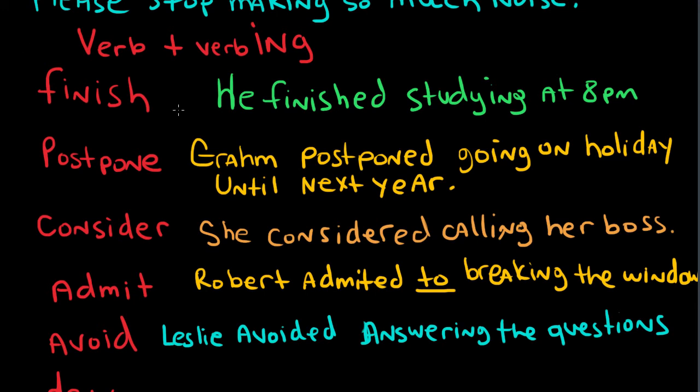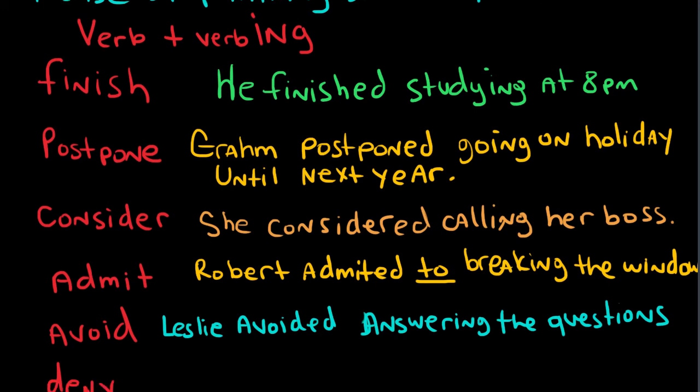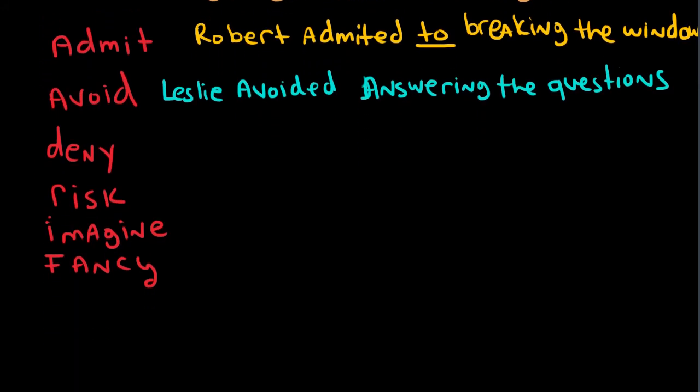And a few more. Let's see if we can make examples for a few more. Deny, risk, and imagine. Howard denied knowing about the crime.